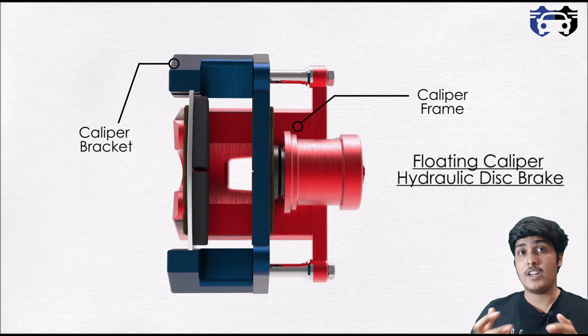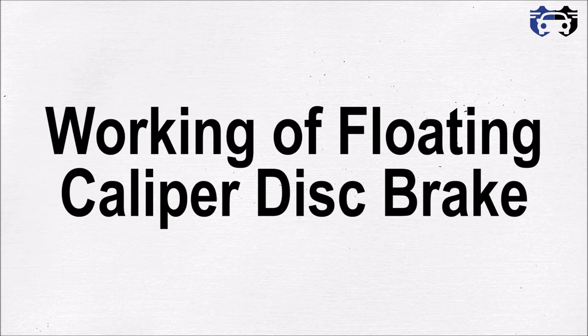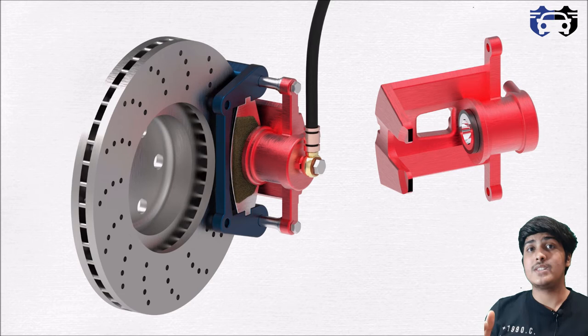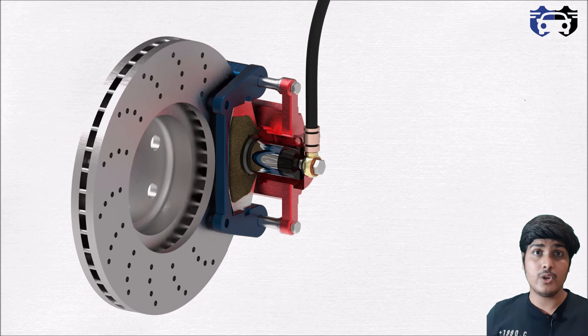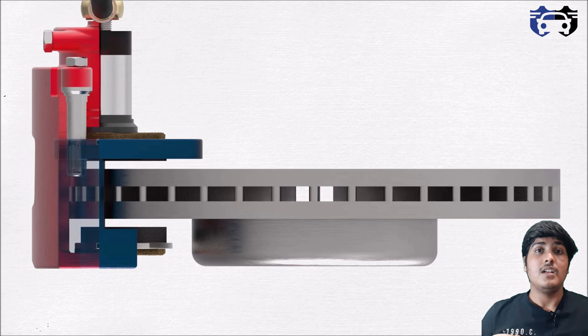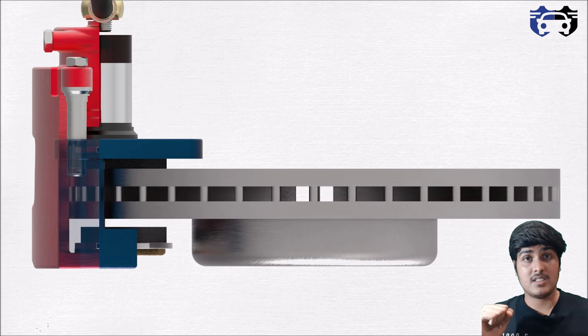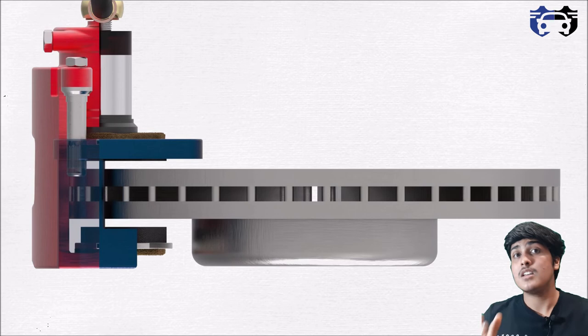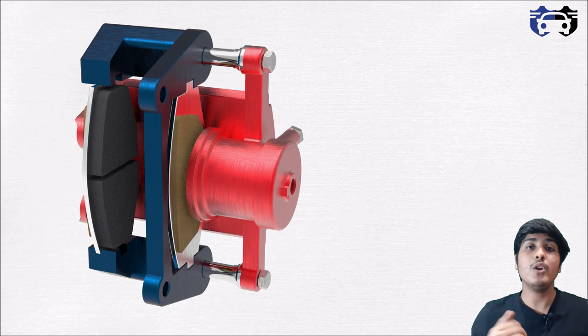Now knowing all the components, let's see how the whole assembly works to stop your vehicle. When you press the brake pedal, pressurized brake fluid travels from the master cylinder via brake hoses and enters the caliper frame. This pressurized fluid pushes the piston, which squeezes the inner brake pad against the disc rotor. As the inner brake pad touches the disc rotor, fluid back pressure starts acting on the inner wall of the caliper frame, pushing the caliper frame backward — which pushes the outer brake pad attached to it against the disc rotor.